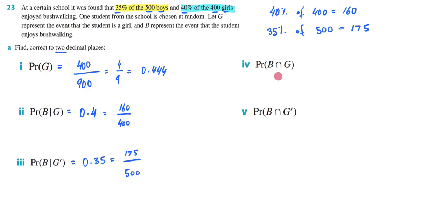Let's now come to this question, question four, which is asking us to find the probability of the intersection of enjoying bushwalking and girls. And I imagine that if you're having trouble with this, with question 23, it's going to be because of these two questions and figuring out what is my sample space for them.